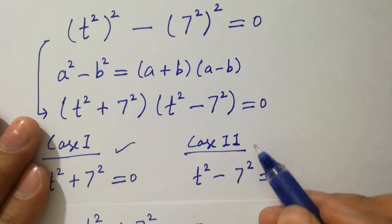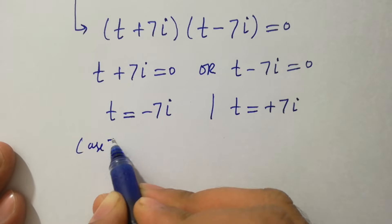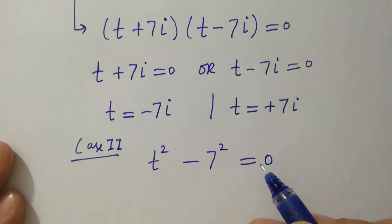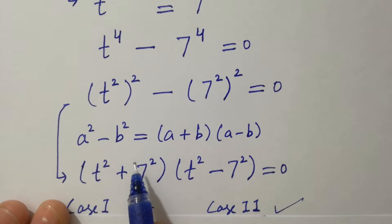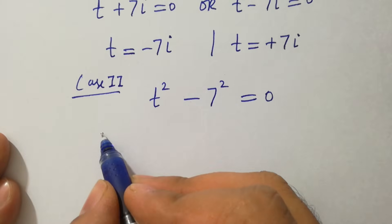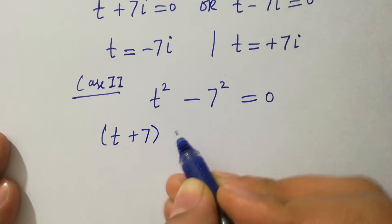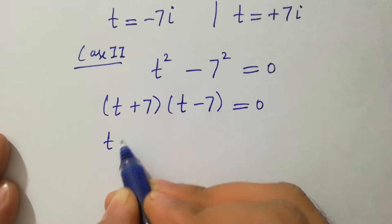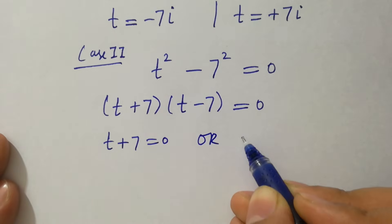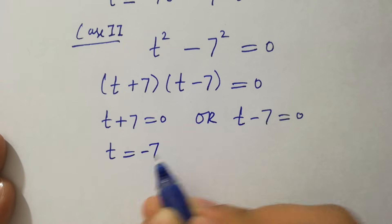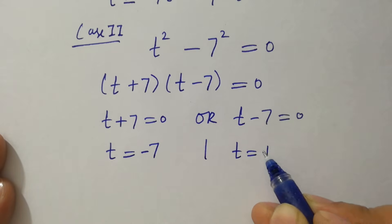For Case 2, t² − 7² equals 0. Using the formula a² − b² equals (a + b)(a − b), we get (t + 7)(t − 7) equals 0. Either t + 7 equals 0 or t − 7 equals 0, giving us t equals −7 or t equals +7.